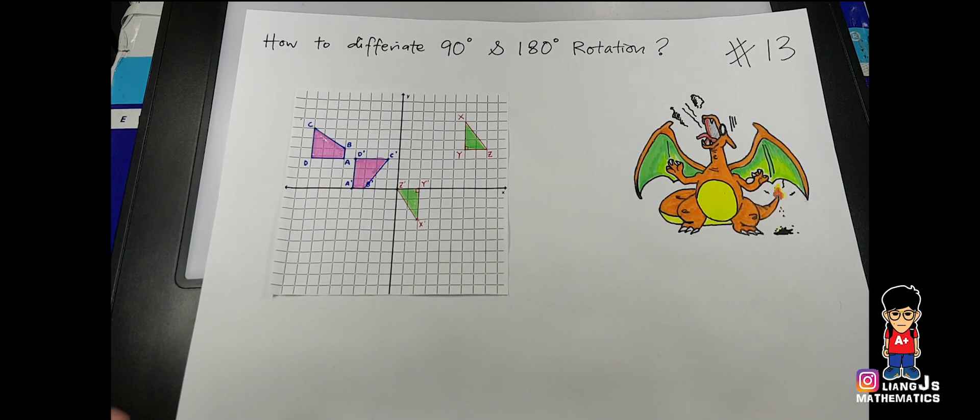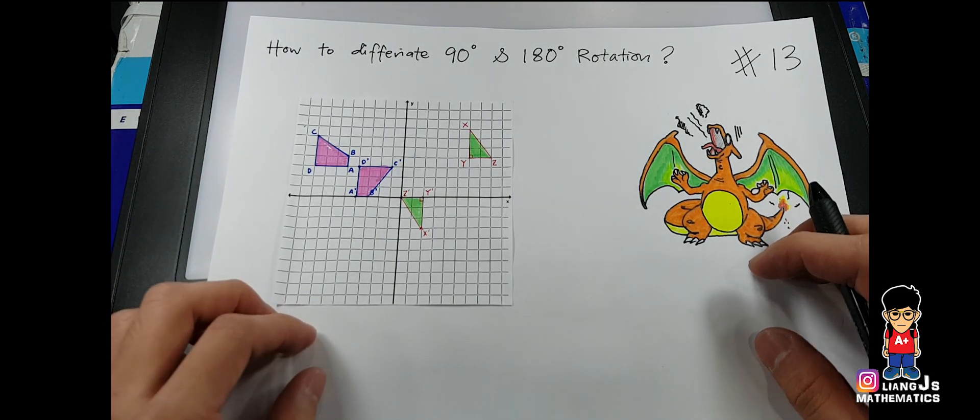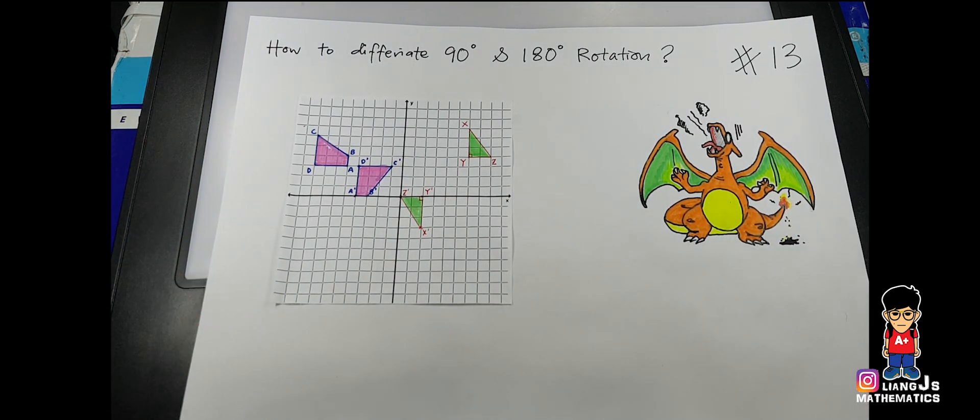So in this case, as you can see, I have two different shapes here where they involve rotation. Let's see.